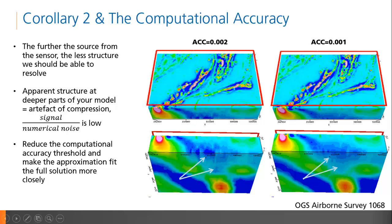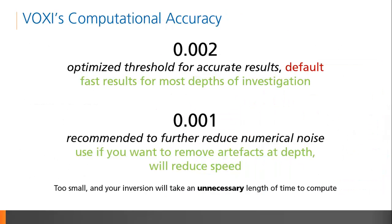That's because the computational accuracy threshold ensures a better fit to the potential field solution, not a better fit to a particular gradient like smoothness. The default computational accuracy threshold in VOXI is 0.002. This is an optimized threshold that quickly gives accurate results for most depths of investigation. If you see artifacts at depth and would like to reduce the numerical noise in your model, we recommend lowering the threshold to 0.001. It should be noted that this is not absolutely required — the end result is simply a model that won't be easily misinterpreted as having fine structure at depth.